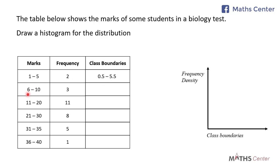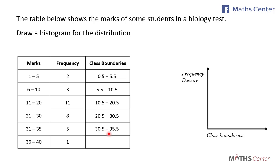For the second interval, 6 minus 0.5 gives 5.5 and 10 plus 0.5 gives 10.5, so 5.5 to 10.5. The next one: 11 minus 0.5 gives 10.5 and 20 plus 0.5 gives 20.5, so 10.5 to 20.5. Then 20.5 to 30.5, then 30.5 to 35.5, and the last one is 35.5 to 40.5. We now have all the class boundaries.